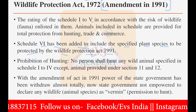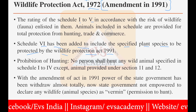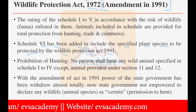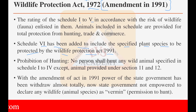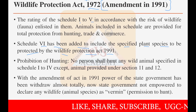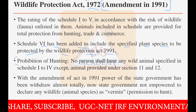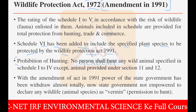So schedules one to five were already in place in 1972; in the year 1991 another schedule was added — schedule six — which is only having plant species. Those plant species are to be protected by the Wildlife Protection Act of 1991. Prohibition of hunting is also provided in the act: no person shall hunt any wild animal specified in schedules one to four.